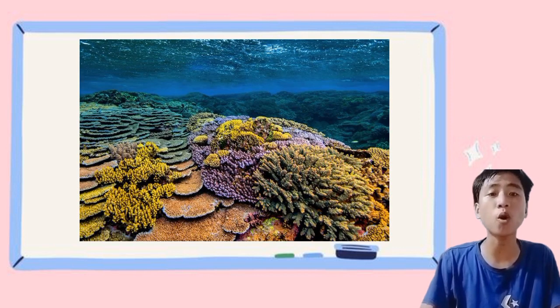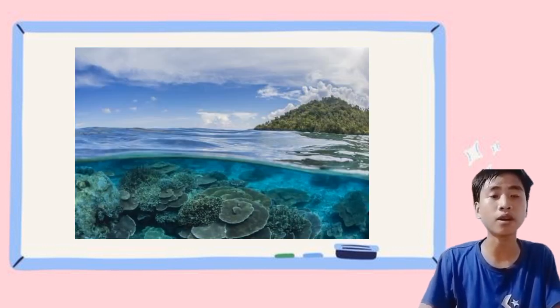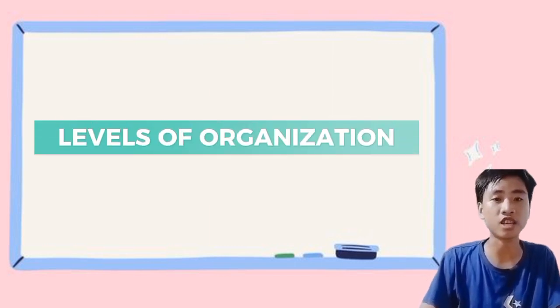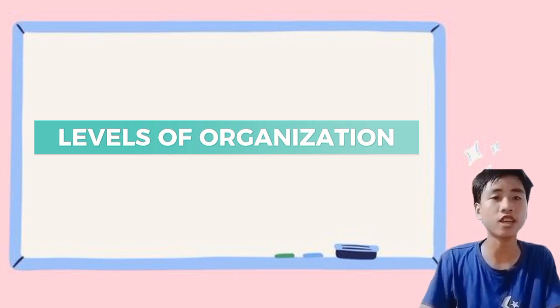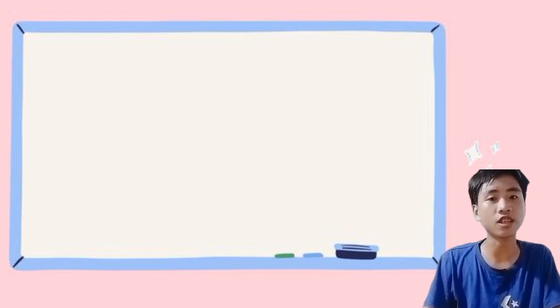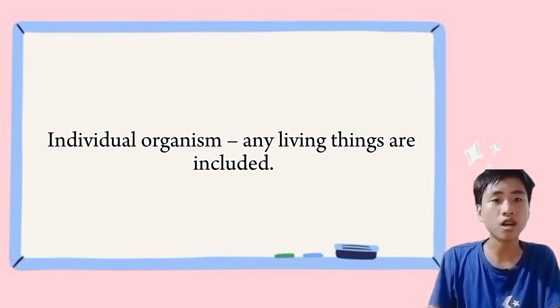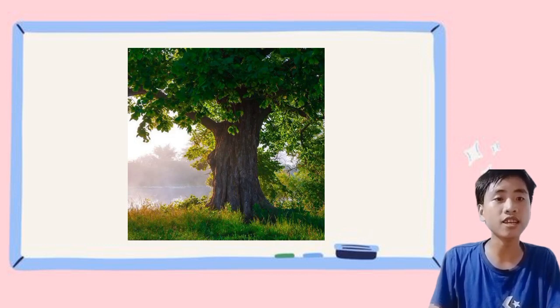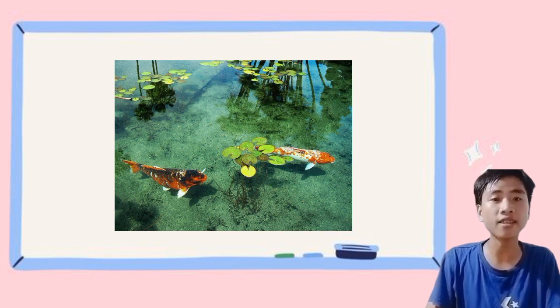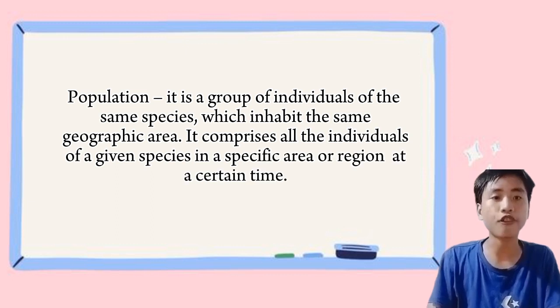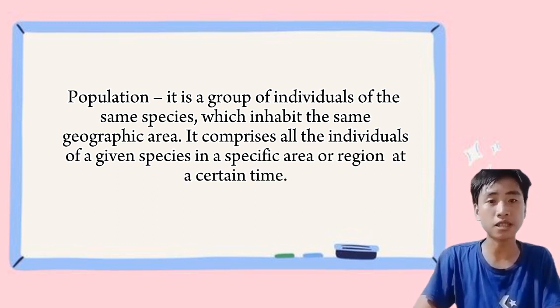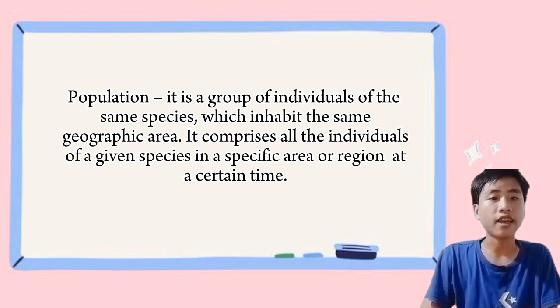Oceanographers use tools like boats and underwater robots to learn more about the ocean. For the next topic, we have the levels of organization. The levels of organization describe how living things are organized from the smallest unit to the largest. The first level is the individual organism — any living thing, such as a plant, animal, or microorganism. This could be a single tree in a forest, a fish in a pond, or a bird in the sky. The second level is population: a group of individuals of the same species in a specific area or region at a certain time.